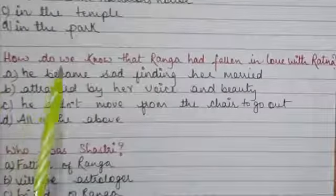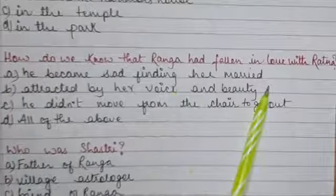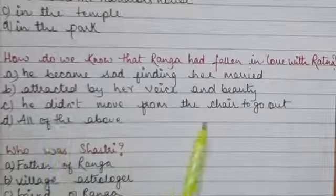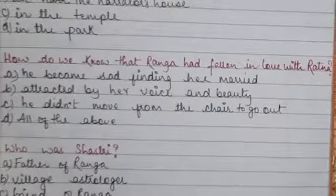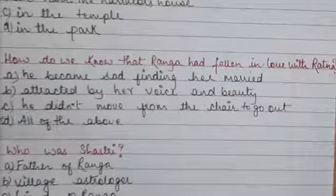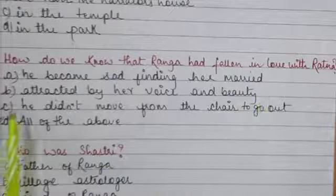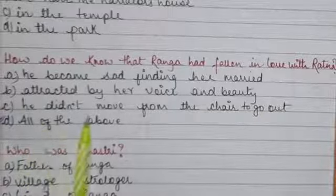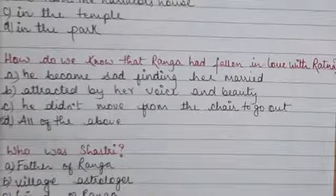How do we know that Ranga had fallen in love with Ratna? Option A: He became sad finding her married, Option B: Attracted by her voice and beauty, Option C: He didn't move from the chair to go out, Option D: All of the above. Option D is correct — all of the above. He was very sad when he heard Ratna was a married girl, he was enchanted by her voice, and he wanted to see more of her so he didn't move from his chair.